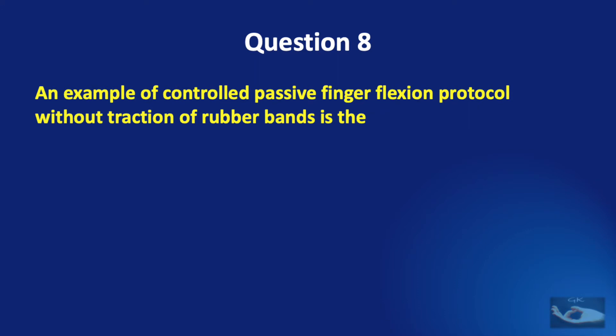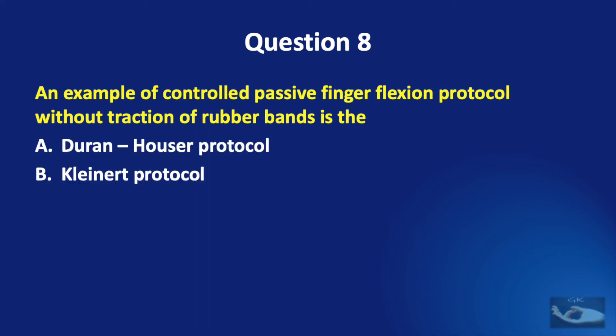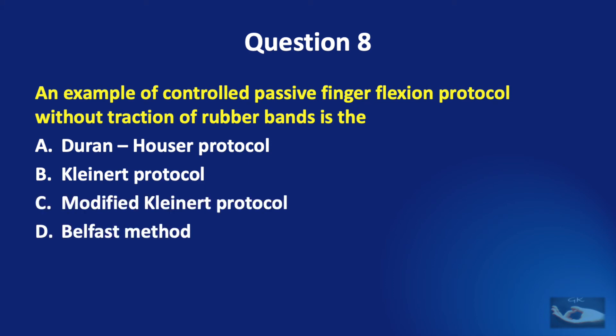Question number eight. An example of controlled passive finger flexion protocol without traction of rubber bands is: the Duran-Houser protocol, Kleinert protocol, modified Kleinert protocol, or Belfast method?